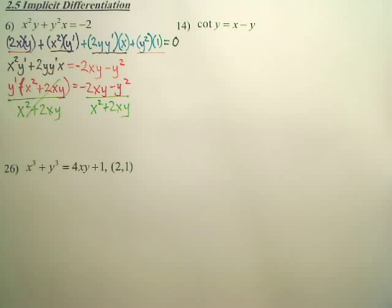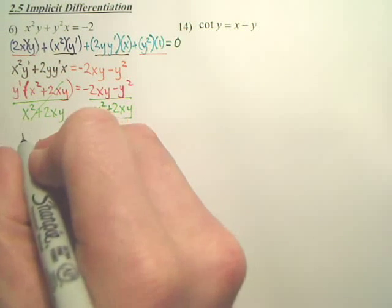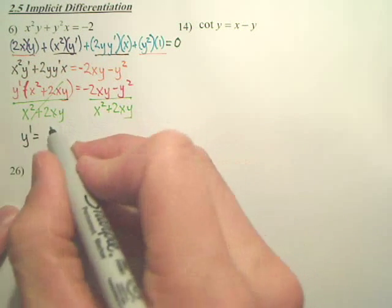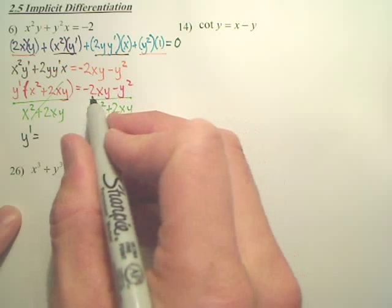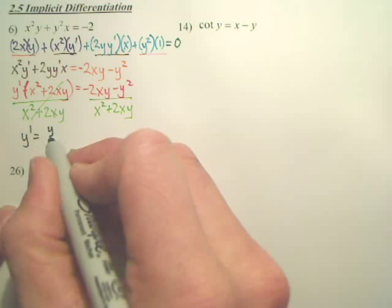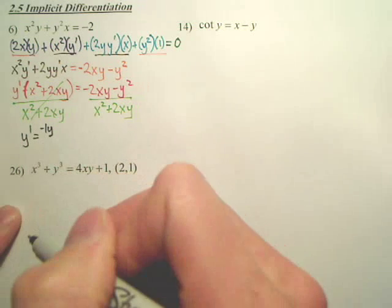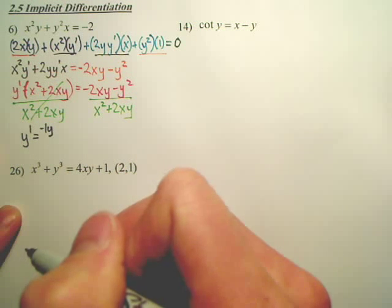Do you see y prime equals, is there a GCF on top? There is a y in common. I'm actually putting a negative 1y. Because they're both negative, I kind of want to get the negative out.